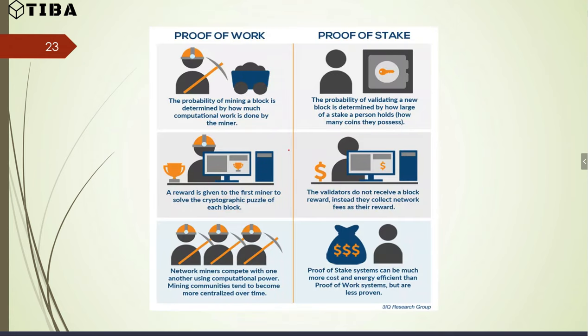There are key differences between proof of work and proof of stake. In PoW, the probability of mining a block is determined by computational work done; in PoS, it is determined by how large a stake a person holds. In PoW, the reward goes to the first miner to solve the cryptographic puzzle; in PoS, validators collect network fees instead of block rewards. In PoW, mining communities tend to become more centralized over time, while PoS systems can be much more cost and energy efficient, though less proven in practice.